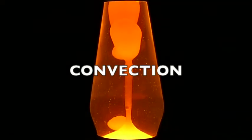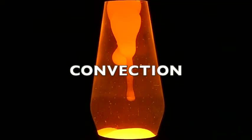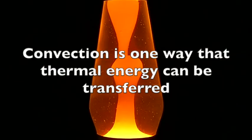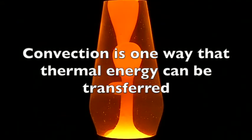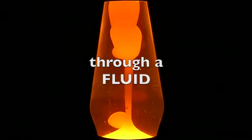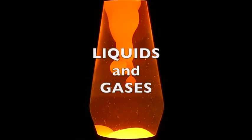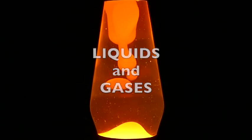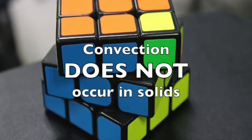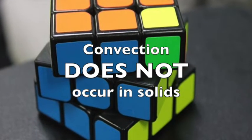In this video we will be talking about convection. Just to review, heat can be transferred in three ways: conduction, convection, and radiation. Convection is one way that thermal energy can be transferred through a fluid. Fluids are substances that can flow and include liquids and gases. Convection does not occur in solids, and we'll talk about why in a moment.